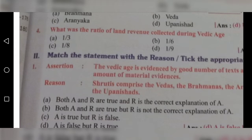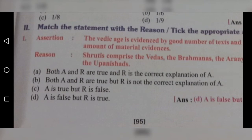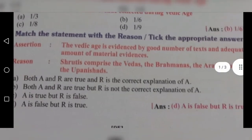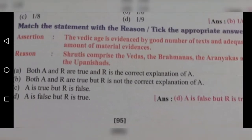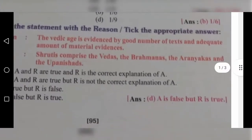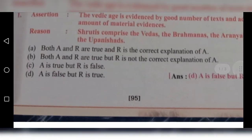Roman numeral 2: Match the statement with the reason. Tick the appropriate answer. We have to read the assertion: The Vedic age is evidenced by a good number of texts and adequate amount of material evidences. For this assertion, the reason given is: Shrutis comprise the Vedas, the Brahmanas, the Aranyakas and the Upanishads. We have to find out the correct answer.